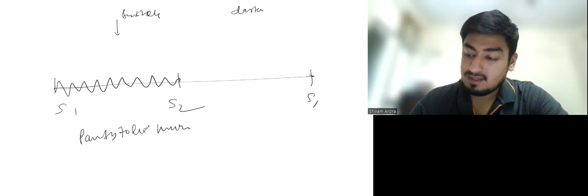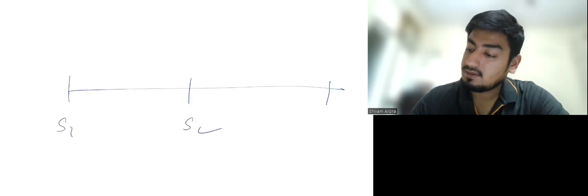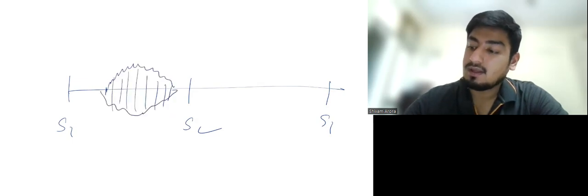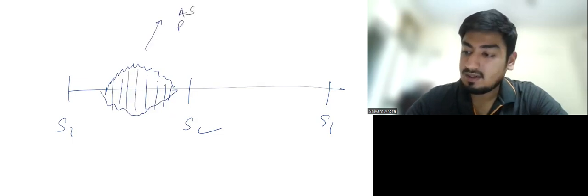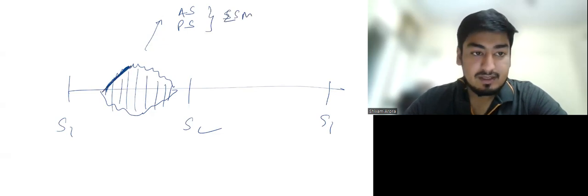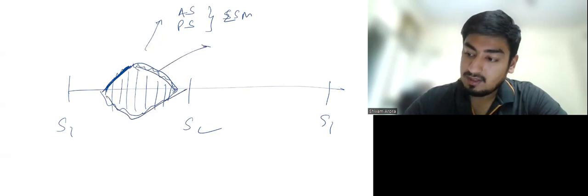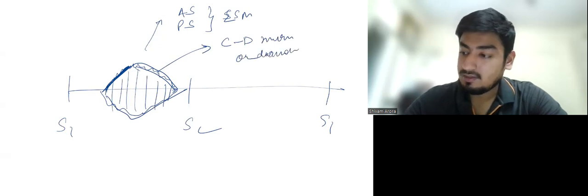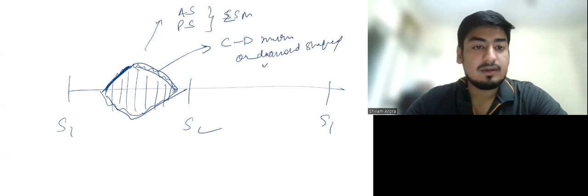Systolic murmur can be pan-systolic as depicted here. Systolic murmur can be mid-systolic, which is there in aortic stenosis and pulmonary stenosis. And this mid-systolic murmur is also known as ejection systolic murmur. The murmur increases and then decreases, so it is also known as crescendo-decrescendo murmur or diamond-shaped murmur.